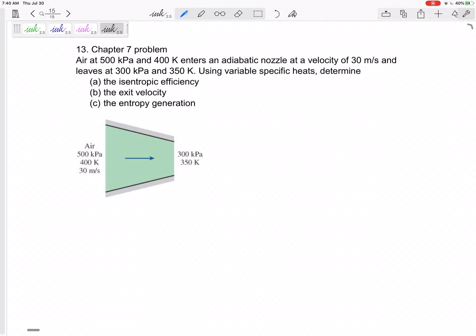All right, so the last problem on the test is a Chapter 7 problem on isentropic efficiency. Here's an adiabatic nozzle - a good steady flow device to test you on isentropic efficiencies. Air at 500 kPa, 400 Kelvin, 30 meters per second leaves at 300 kPa, 350 Kelvin.